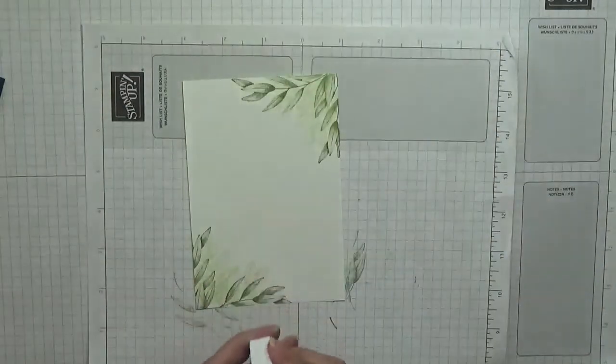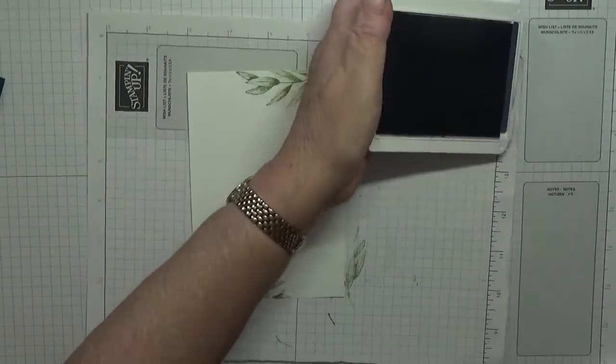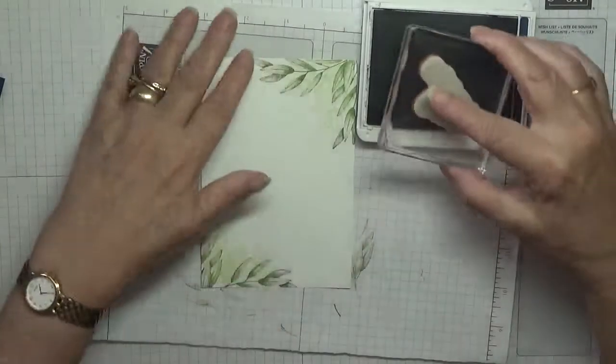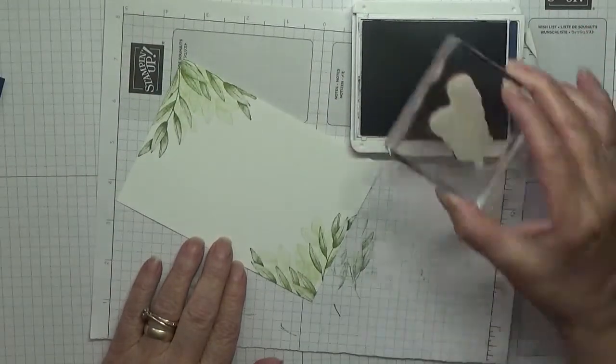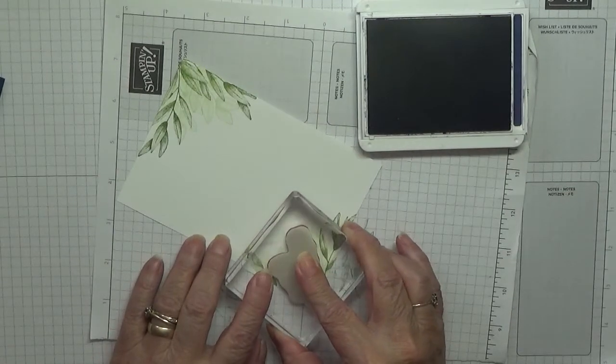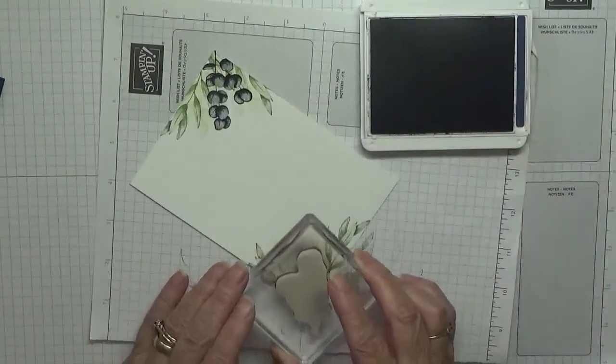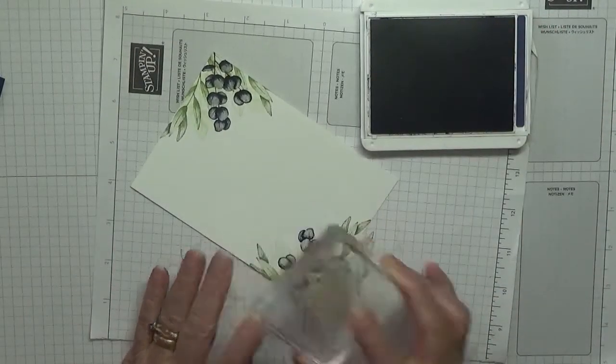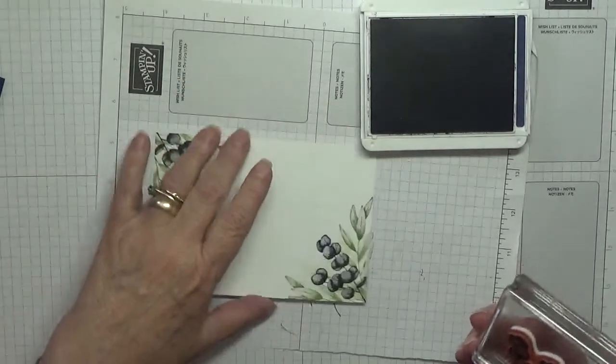And we're going to use Night and Navy, and we're going to use our bubble stamp, and we're just going to use one of these right in the middle, like that, and that's the way I want it.